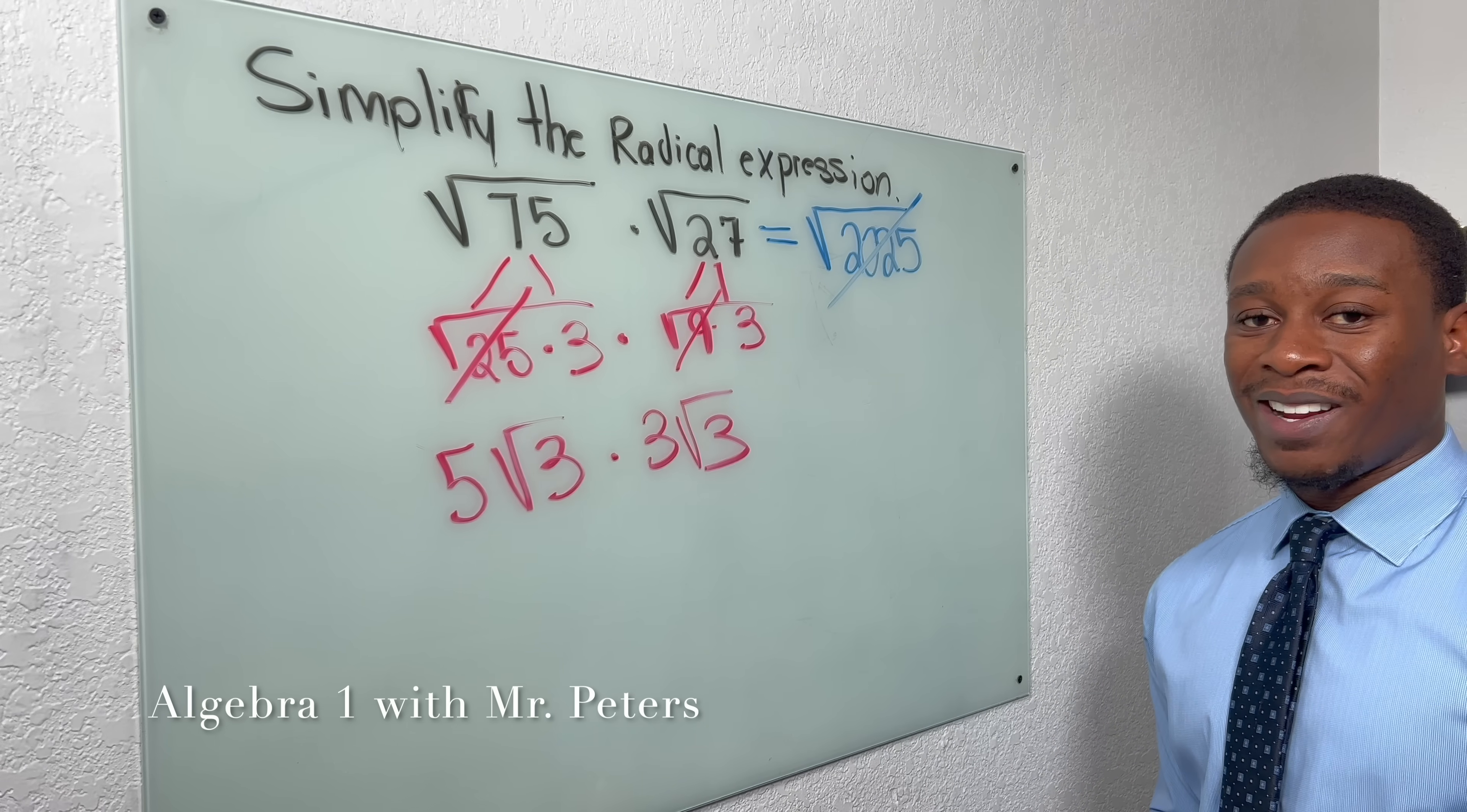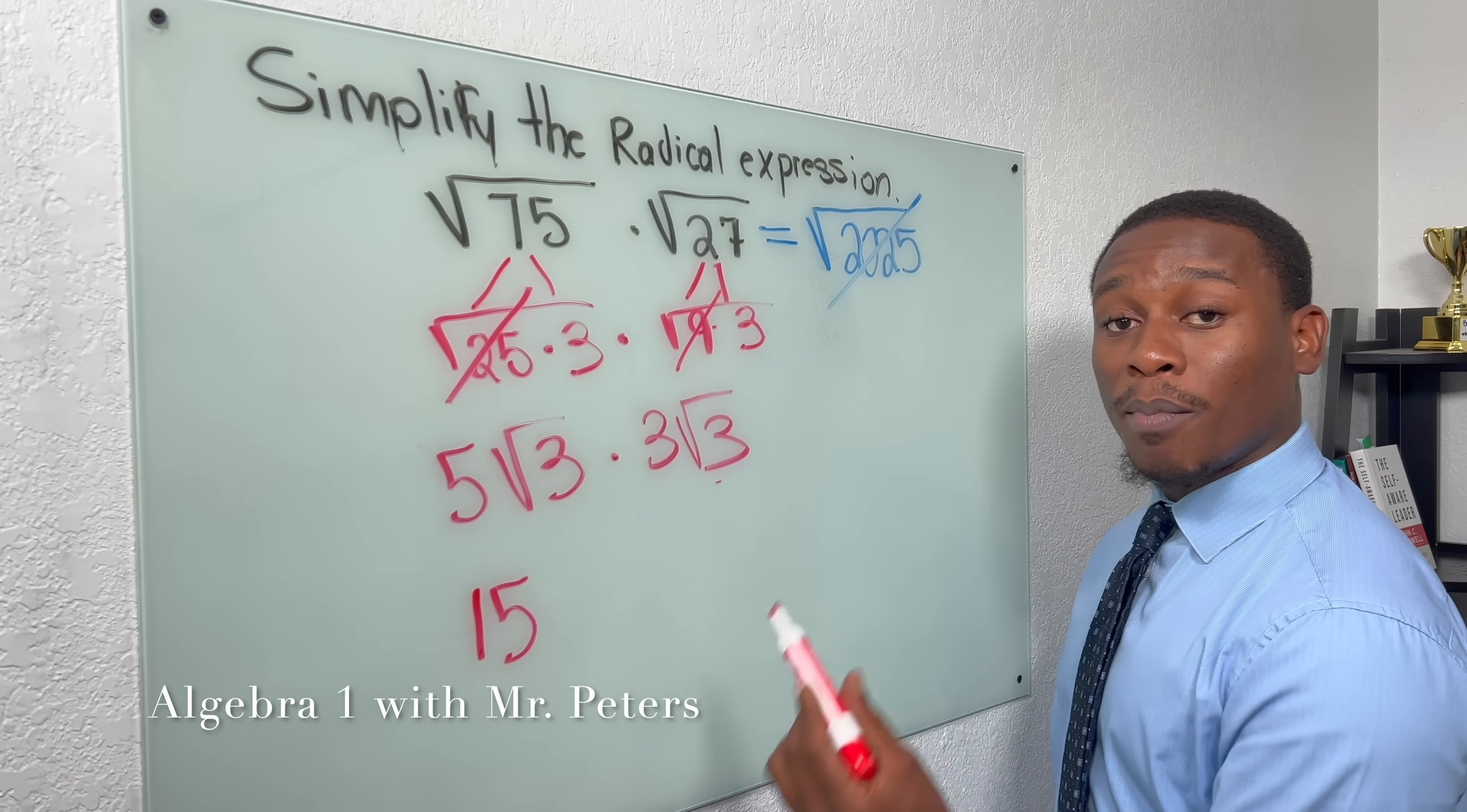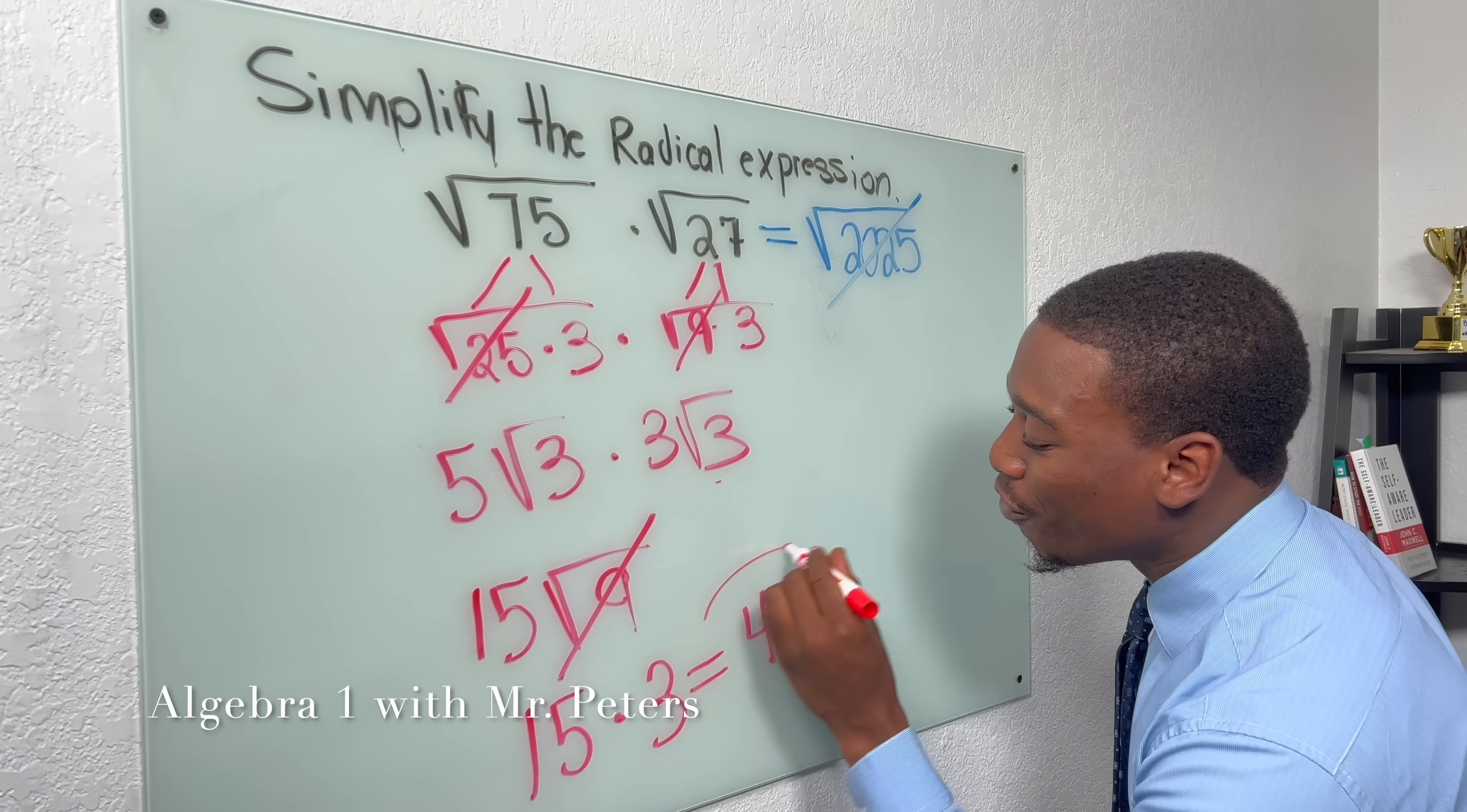See, this is the trick right here. A lot of students are going to think that we just multiply the coefficients. That's not true, right? We're going to multiply the coefficients and get 15. And we're also going to multiply the radicals because they do have the same root. So we're going to get 15 radical 9. When we simplify, which we have to, we're going to get 15 times 3. And our final answer is going to be 45.